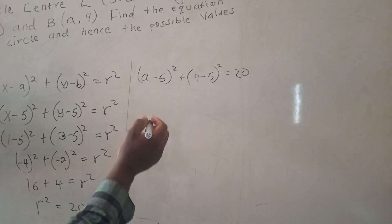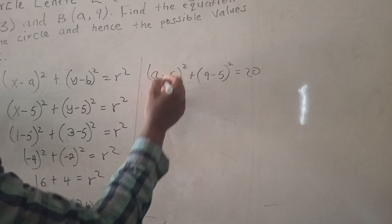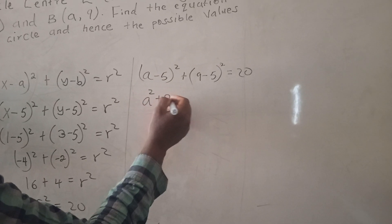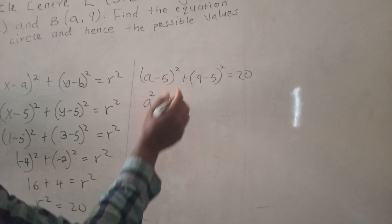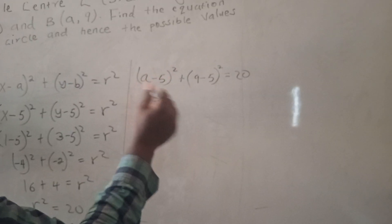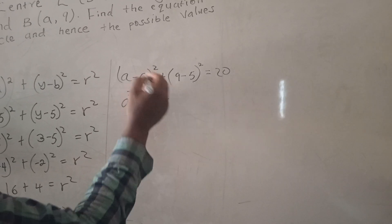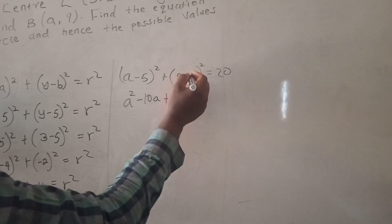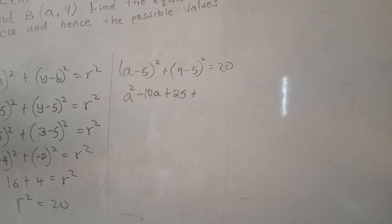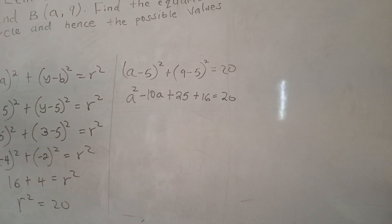So this is going to be a² - 2 times, that is going to be -10a + 25 + this is 4², which is 16. This should give us 20.